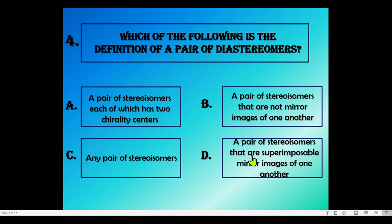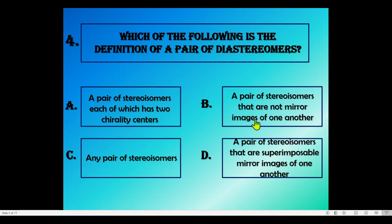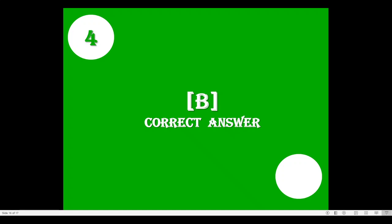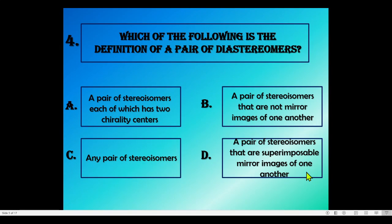Option C: any pair of stereoisomers. Option D: a pair of stereoisomers that are superimposable mirror images of one another. A simple example is cis-trans isomers. Cis-trans isomers are stereoisomers but they are not mirror images of each other. Option D is eliminated because diastereomers are not superimposable mirror images. Therefore option B — a pair of stereoisomers that are not mirror images of one another — is the correct answer.